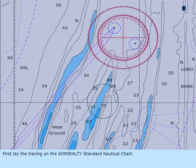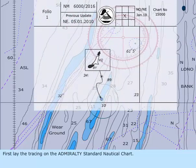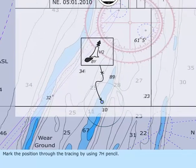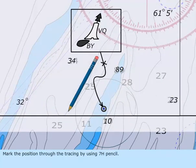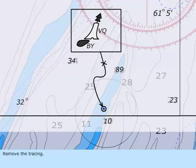First, lay the tracing on the Admiralty Standard nautical chart. Mark the position through the tracing by using a 7H pencil. Then remove the tracing.